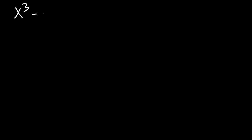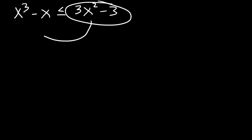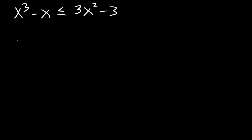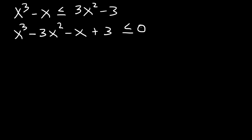Let's try another example: x cubed minus x is less than or equal to 3x squared minus 3. Go ahead and solve this polynomial inequality. I'm going to take everything from the right side and move it to the left side, writing it in standard form: x cubed minus 3x squared minus x plus 3, and that's less than or equal to 0.